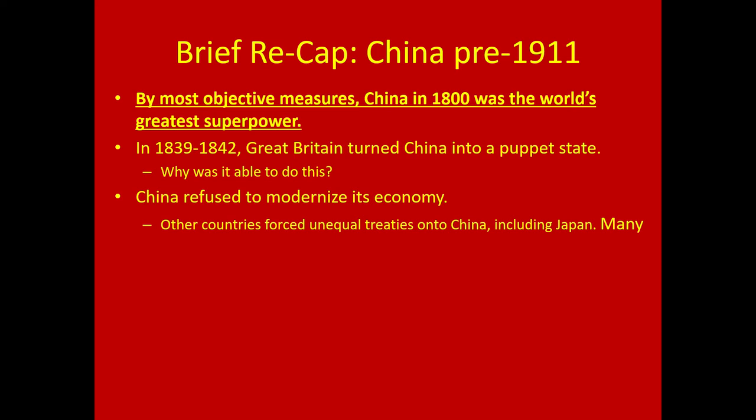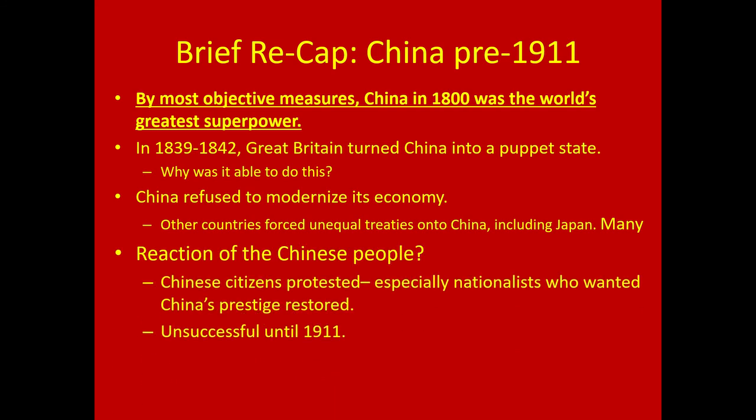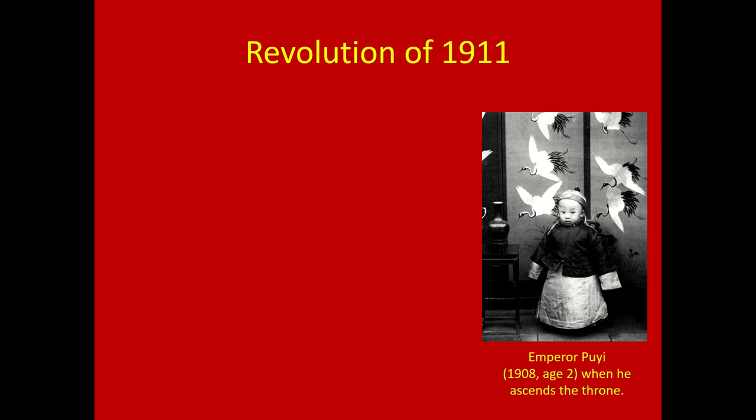China refuses to modernize its economy and doesn't successfully industrialize, and other countries start to take advantage of China's weakness — including Japan, which industrialized itself and wound up taking Korea, for example. How did the Chinese people react? Citizens protest; there's a series of protests and attempted rebellion movements, which are all unsuccessful until 1911.